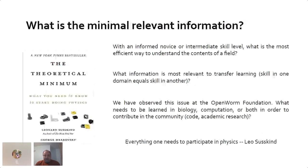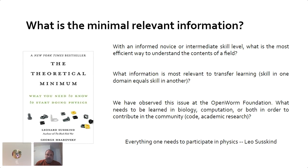We can use some criterion to determine what you need to know to be competent in some area. This has been addressed by physicist Leonard Susskind, who along with his co-author wrote a book called 'The Theoretical Minimum.' Their concern was: if you took an informed novice — someone with maybe an undergraduate degree or high school diploma — what is the most efficient way to understand the contents of a certain field?